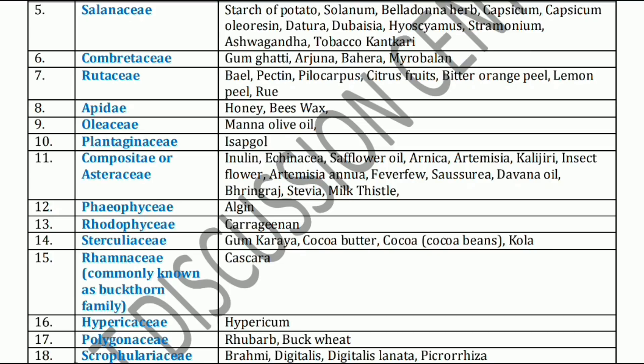Next, Compositae or Asteraceae family. It includes Inulin, Ignatia, Cephalin oil, Arnica, Artemisia. Artemisia annua is used as a medicinal plant with artemisinin as the active chemical constituent for malaria. Also included: Kalaziri, Insect flour, Artemisia annua, Feverfew, Saussurea, Davanaoil, Bhringraj, Stevia, and Milk thistle. These come under the Compositae family.